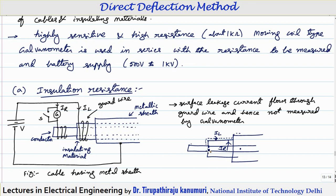Why does this leakage current come? It comes mainly because of the moisture and impurities present in your insulator. Practically, when your cable is exposed to the atmosphere it will absorb moisture, because of which the surface will start conducting and a small leakage current will start passing. Particularly when measuring high value resistances, the current IR itself is very small and is comparable to the leakage current, so proper precaution should be taken.